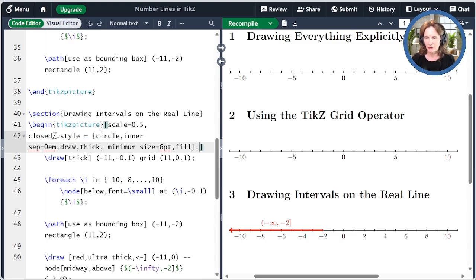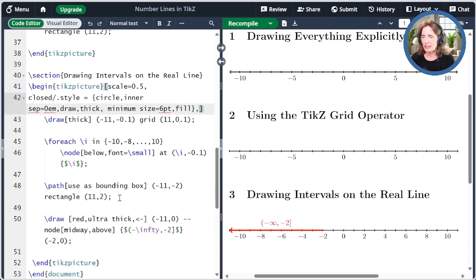We're making it a circle. The inner sep is zero. That means we're taking away the excess space. We're going to draw it the outside. We're going to make it thick. We're going to make the minimum size to be 6pt, and we're going to fill the node because this is a closed node.